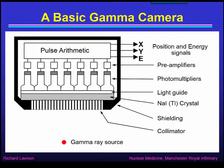The design of a basic gamma camera allows it to take a picture of a gamma-ray source, such as activity within a patient, by detecting gamma-rays that pass through a hole in the collimator to reach the sodium iodide scintillation crystal.